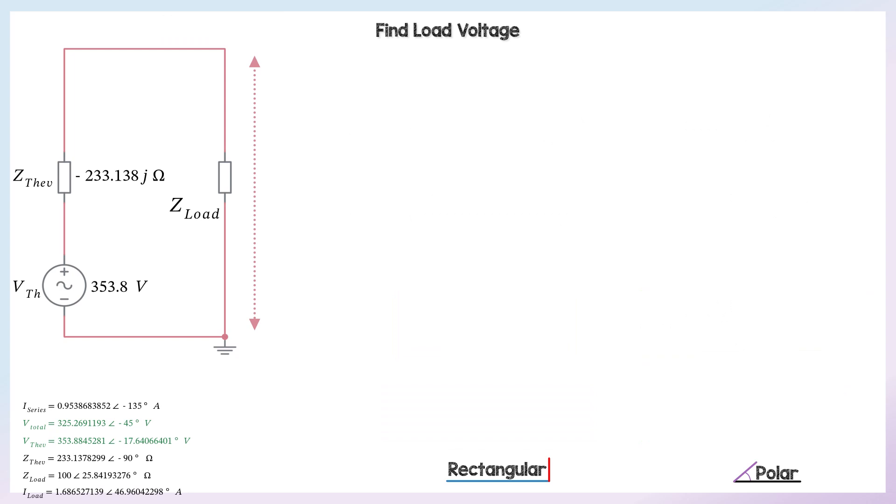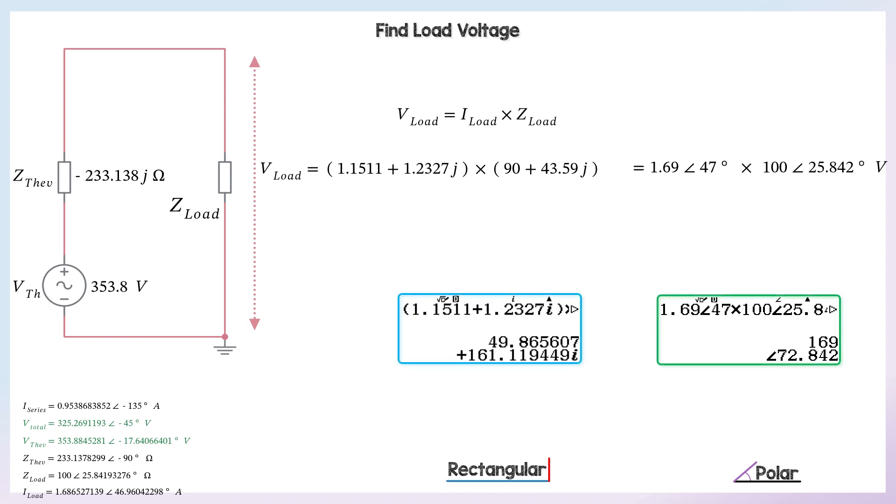V equals IR, but basically V equals I times Z in this case. So it's the current through it times its impedance. So that is 169 volts, roughly, the load voltage.